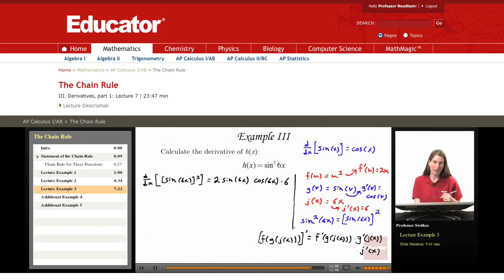But let's simplify things a bit. The 2 times 6 is 12. And so we have 12sin(6x)cos(6x). And that's our final result.